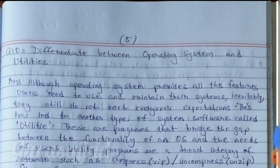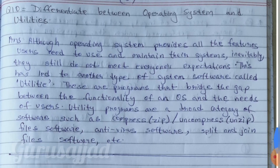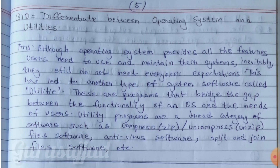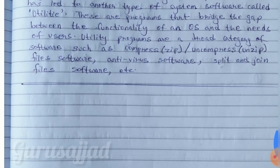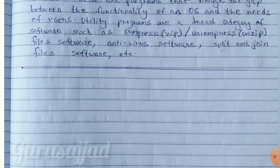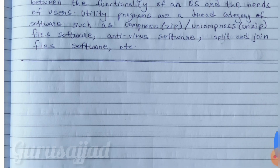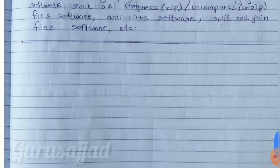Question number 10: Differentiate between operating system and utilities. Although an operating system provides all the features users need to use and maintain their systems, it still does not meet everyone's expectations. This has led to another type of system software called utilities — programs that bridge the gap between the functionality of an OS and the needs of users. Utility programs include software such as compress/zip or uncompress/unzip, file and split-join software, antivirus software, etc.